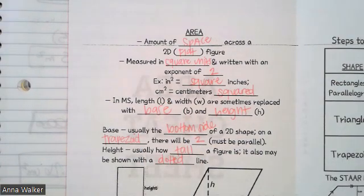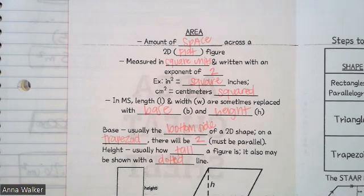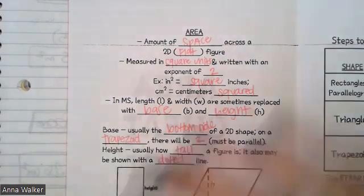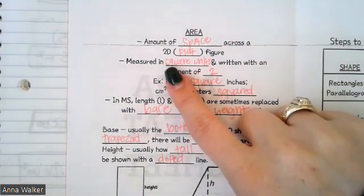Area is needed for a variety of different things. Like if you're trying to figure out how much carpet or flooring you need to put down in your house, you have to know the area — how much space is actually being taken up in that room. If you're trying to figure out how much grass you need for your yard, you need to know the area of your backyard. If you're trying to figure out how much paint you need to cover a wall, you need to know the area of the wall. So because we're looking at the amount of space on a flat two-dimensional figure, we are going to measure in square units.